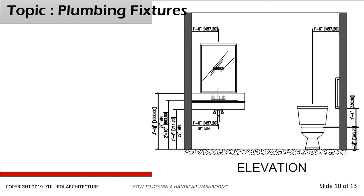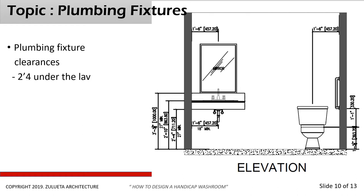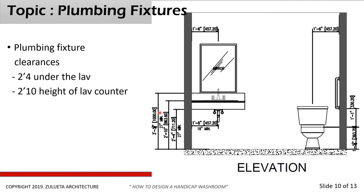Plumbing fixture clearances: the elevation shows two feet four inches clear underneath the lavatory or sink, two feet ten inches for the height of the counter, and three feet three inches — or one meter — for the bottom of your mirror. On the toilet side, one foot three inches is the toilet seat height.